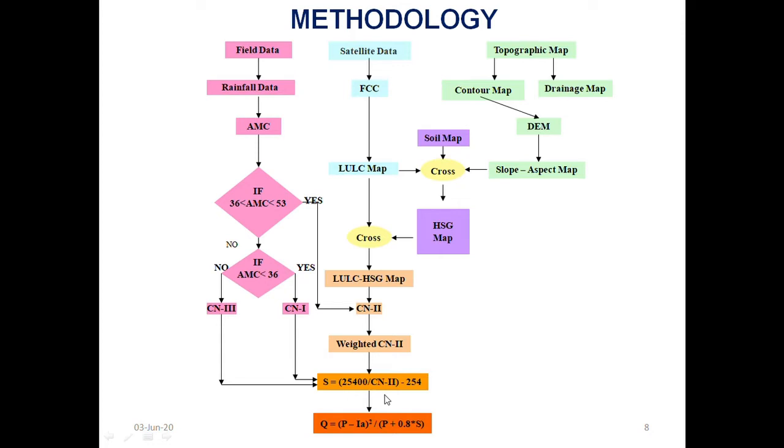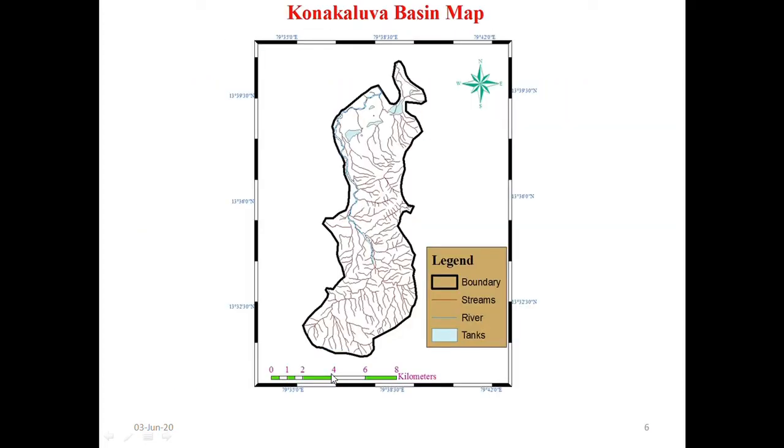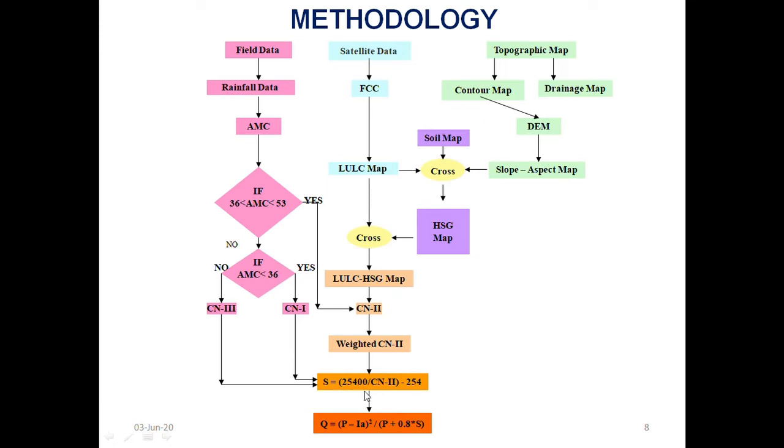This rated curve number two will be implicated to the surface retention grid, which is S, denoted as. Here the formula is 25400 by CN2 minus 254.